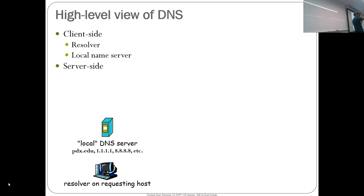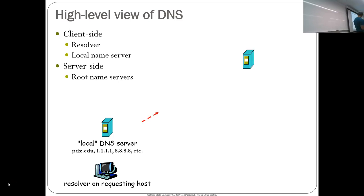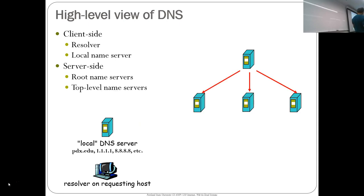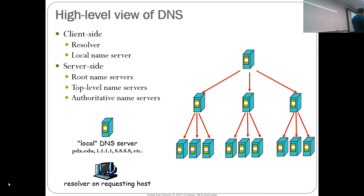The local DNS server is the piece that can ask questions to the hierarchy. For example, pdx.edu has 131.252.208.53 as its local DNS server. You could point it to Cloudflare's DNS server at 1.1.1.1 or Google's at 8.8.8.8. The server then points to the hierarchy — the distributed database — to resolve the name. It starts with the root name servers, goes to the top-level domain servers, and then finally to the authoritative name servers at the bottom.